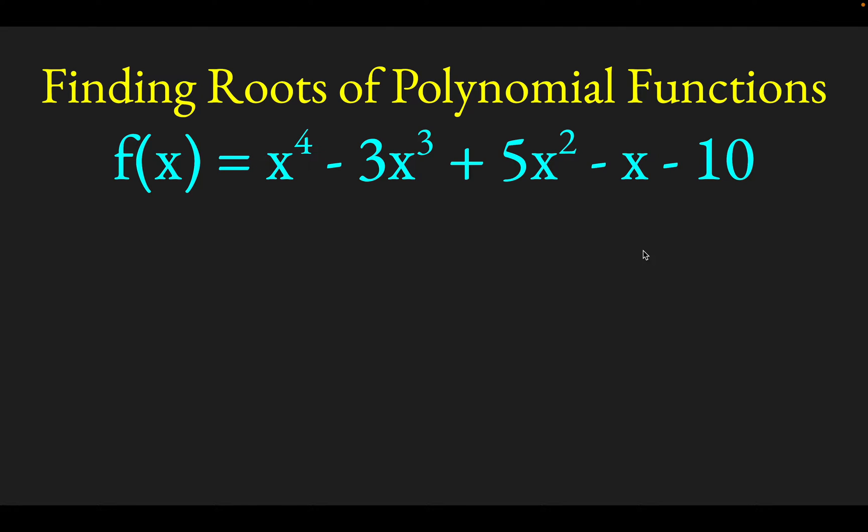All right, my friends, we're going to take a look at a process for finding roots of polynomial functions. Here's a fourth order or quartic polynomial. To kick this off, you want to look at that last term, the constant term, and find its factors. Traditionally, these factors are called P. So the factors are 1, 2, 5, and 10.